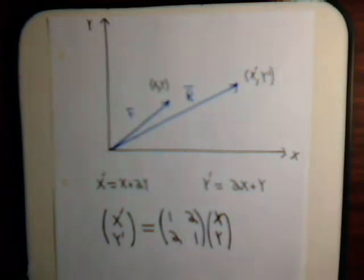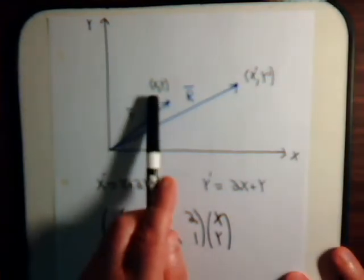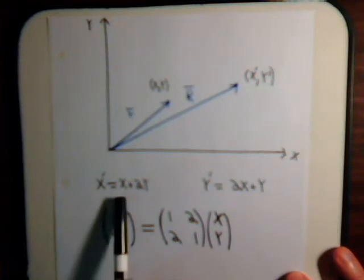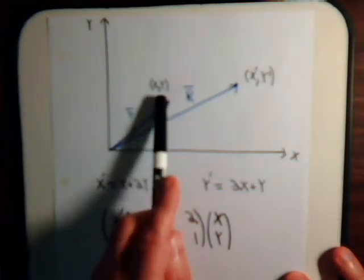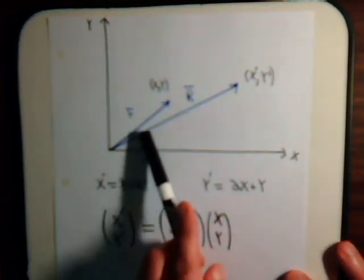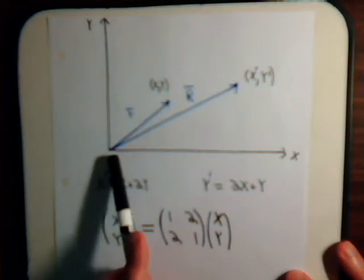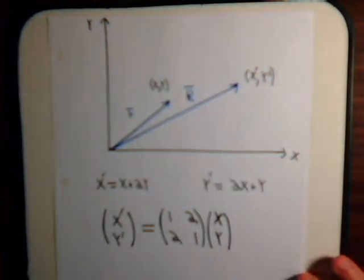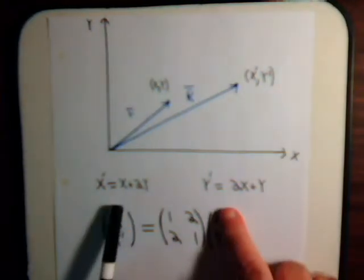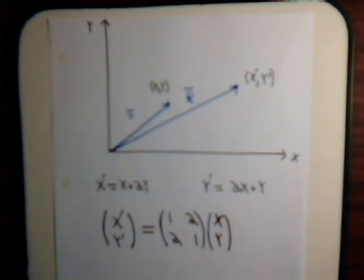The different line that we have will be of longer length than r, because for each x here its corresponding x prime is going to be bigger, and for each y point here the corresponding y prime is going to be larger. So this might be small r, and the x prime, y prime points will comprise a longer vector big R. These two equations we can of course write in matrix form.